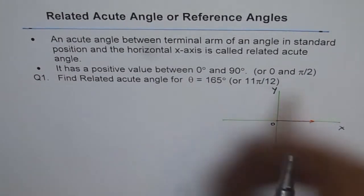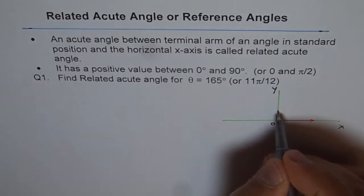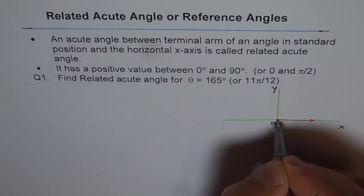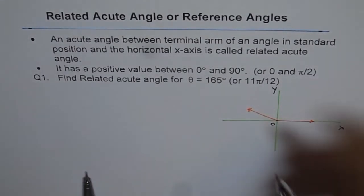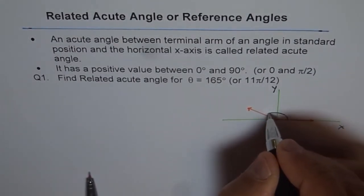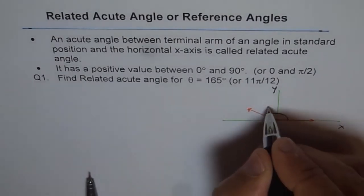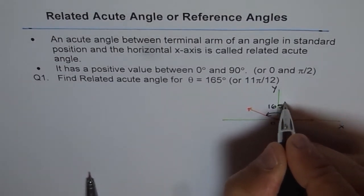165 degrees is more than 90, less than 180, so somewhere here. So let me just draw a line like this. And let me say that this angle from here to here is 165 degrees.